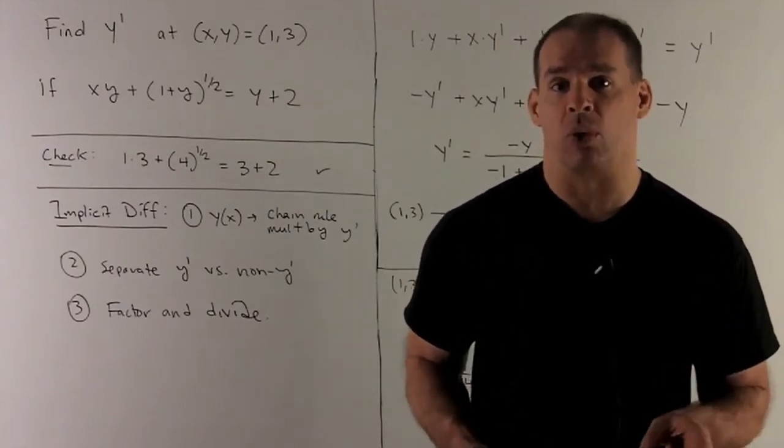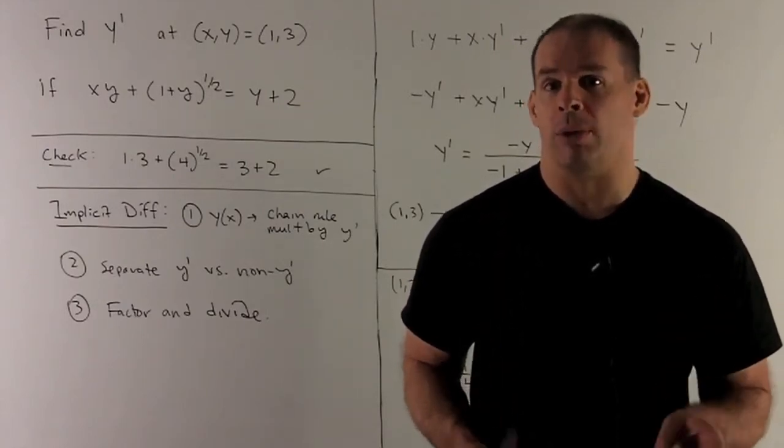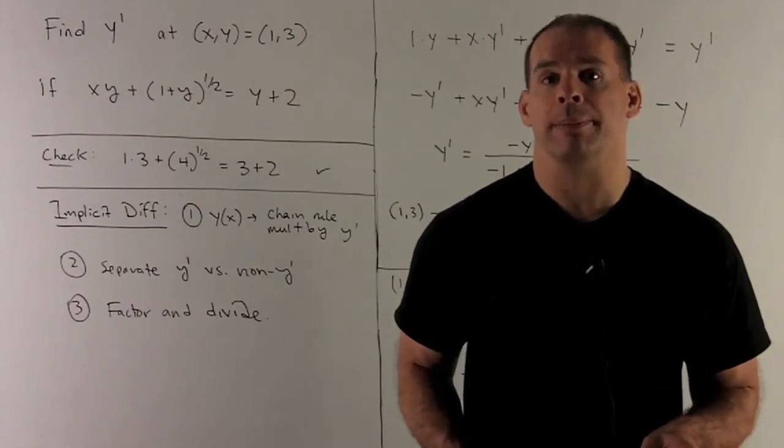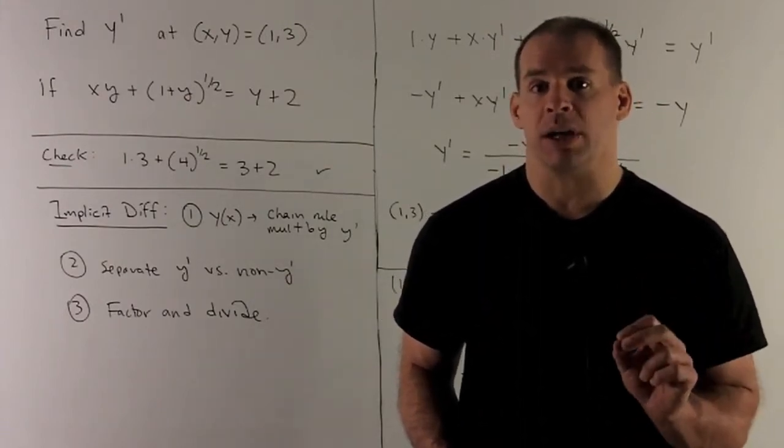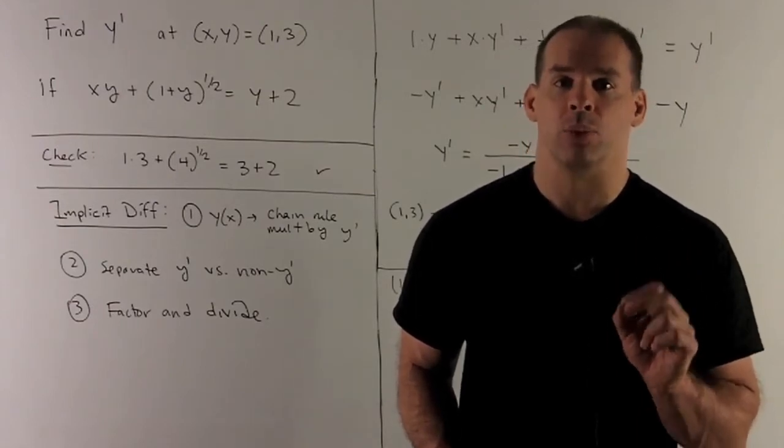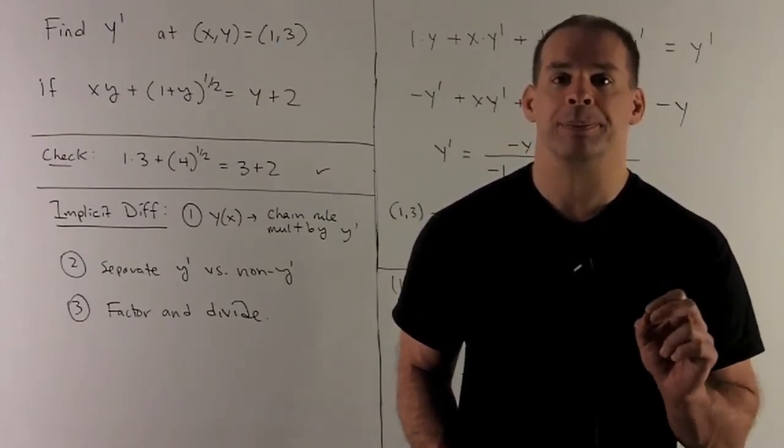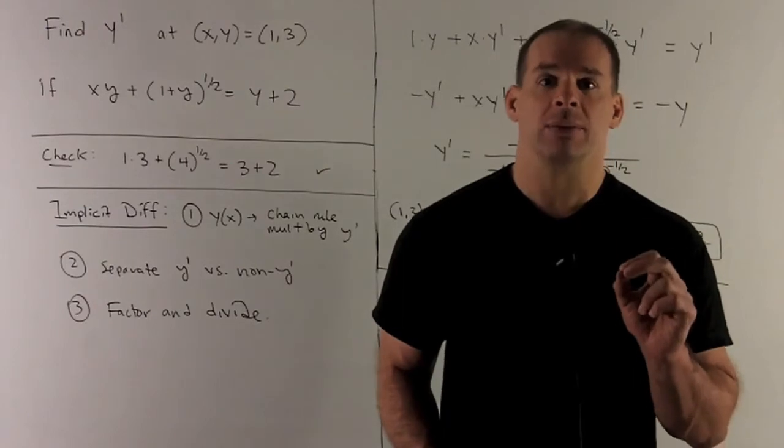So we're going to hit it with the chain rule, which will mean we have to multiply by a y prime. Finally, you're going to have to do a little bit of algebra to isolate your y prime. We'll get to that when we see it. So let's start with taking the derivatives.